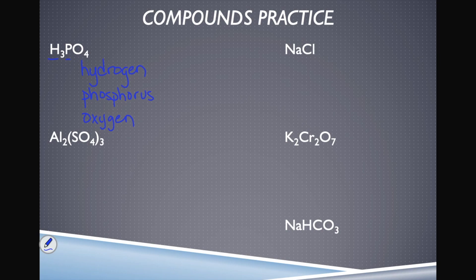How many of each of those do we have? That's indicated by the subscripts. The subscripts always apply to whichever element was written directly before them. So this three tells me we have three hydrogens. Moving on to phosphorus — there's no number written here. Whenever there's no number written, that means there's only one. Anytime there's only one of something, we don't write a subscript. So there's only one phosphorus. And for oxygen, we've got a four written as a subscript, so we have four oxygens.